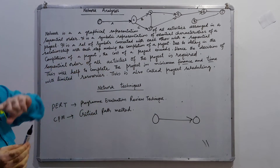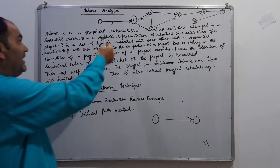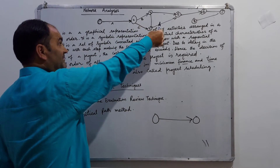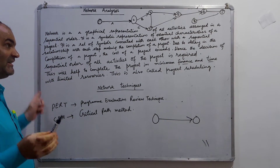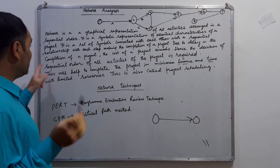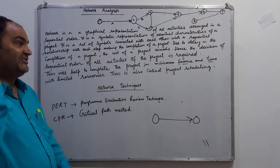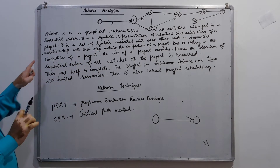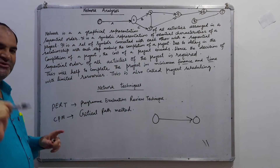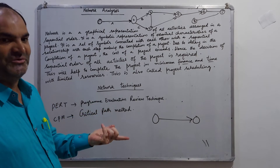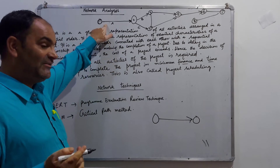A network is a set of symbols connected with each other in a systematic, sequential order, with each step making the completion of the project. Due to delay in the completion of the project, the cost of the project exceeds. If the project is delayed, the cost will exceed — so we need network analysis.